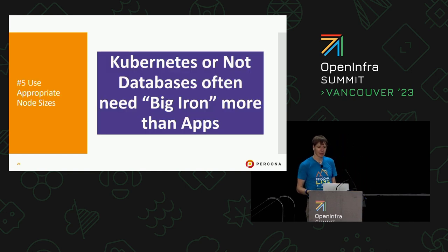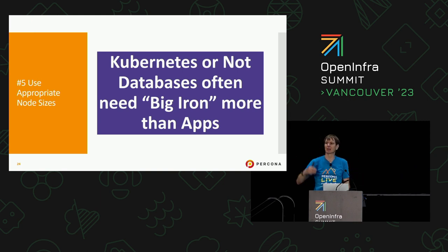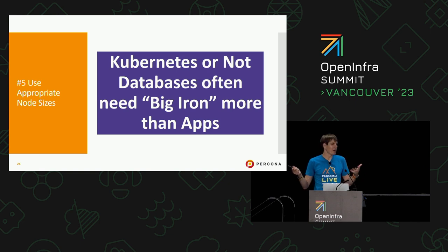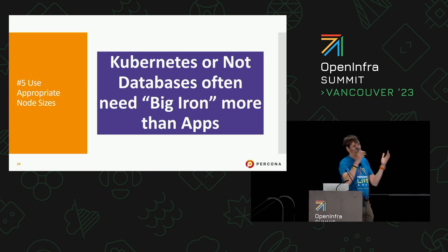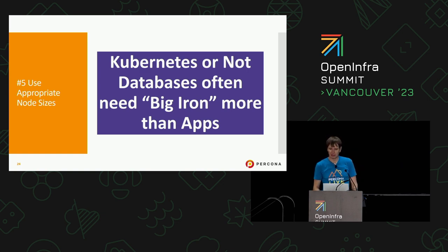The next one is to use appropriate node sizes for Kubernetes. I've seen people use relatively small node-sized VMs because they're deploying small web apps. But for databases you may want them to be larger — deploying a terabyte database and having, say, 256 GB of memory and 32 cores is quite reasonable. That is what your database instance wants to consume, but it obviously needs the node size to support that.